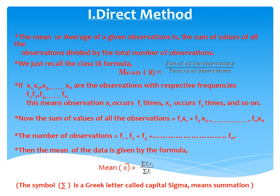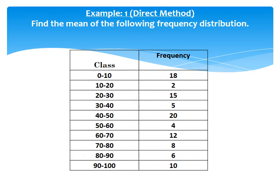The symbol sigma is the Greek letter meaning summation or sum. Let us see an example of finding the mean of given data by the direct method. A question is given with class intervals and frequencies. In the first column we have the classes, and in the second column we have the frequencies of the respective classes. We are going to find the mean of this data using the direct method in the next slide.